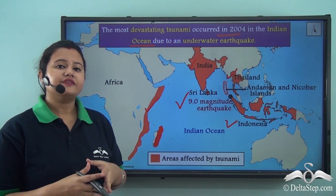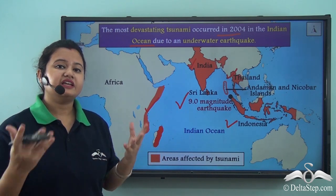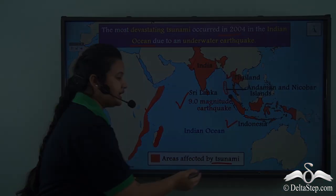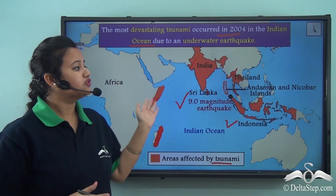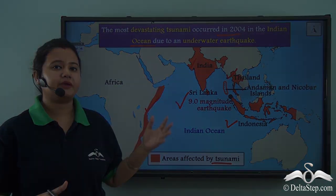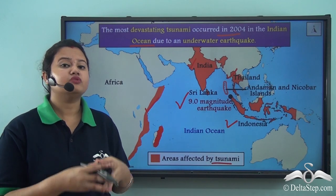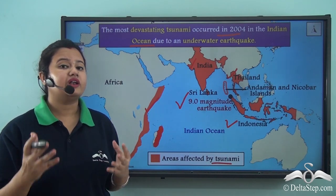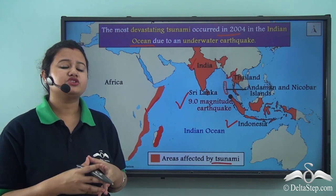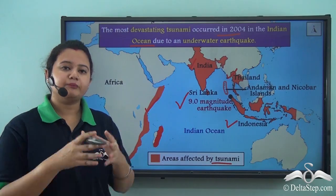In this map, the regions marked in red represent the areas that were affected by the tsunami, and we can see that a vast region was affected. During this tsunami, thousands of people were killed and many people were left homeless, leading to immense destruction of both life and property.